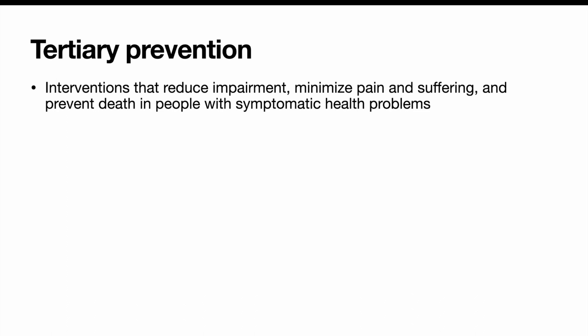Tertiary prevention involves interventions that reduce impairment, minimize pain and suffering, and prevent death in people with symptomatic health problems. These are medications, therapies that help people stay active after they have a disabling disease — things that help a person cope with whatever condition they have.